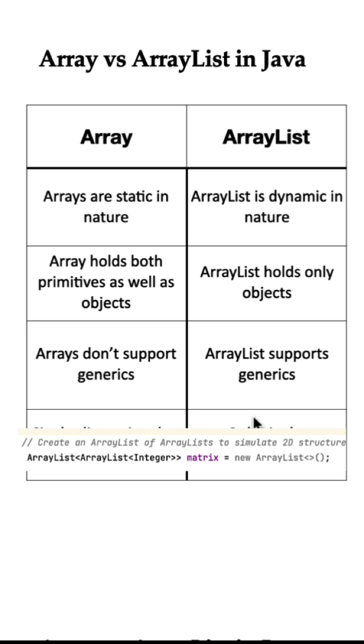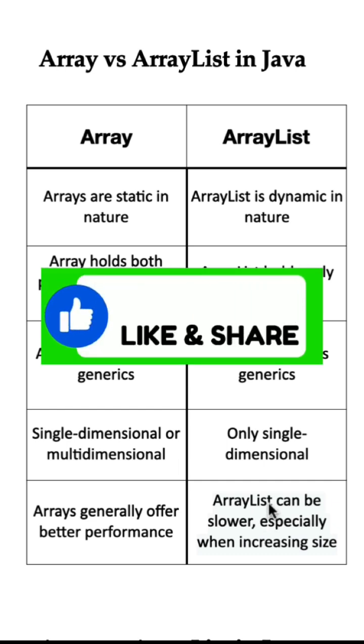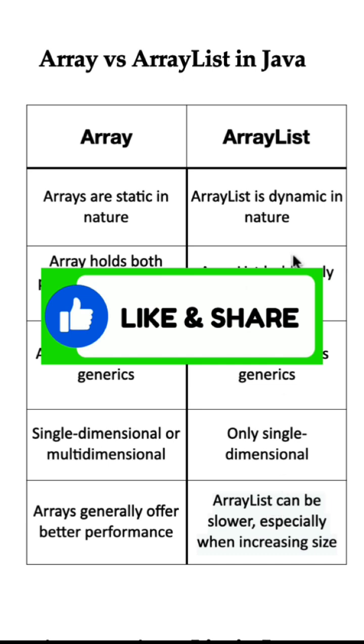Arrays generally offer better performance because they are a simple data structure with direct access to their elements. Whereas ArrayList may be slower, especially when size is increased, as it may involve copying elements to a new array behind the scenes when it runs out of space.